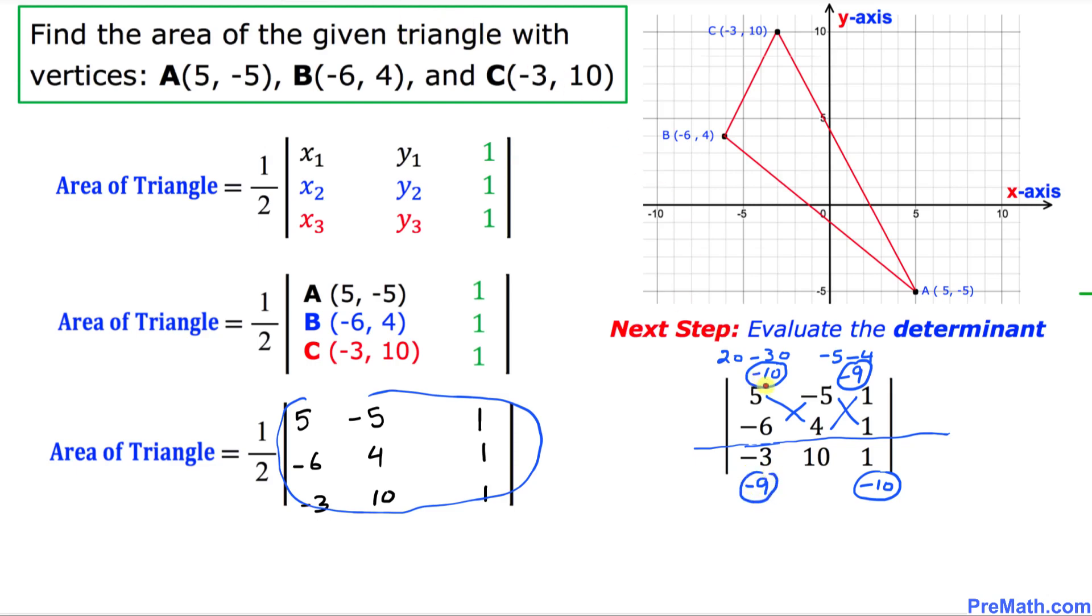Now let's focus on this column, the very first column, 5, negative 6. Just copy and paste over here. And let's crisscross once again.